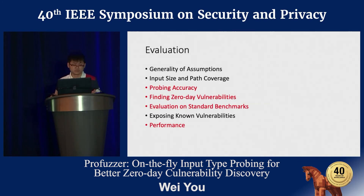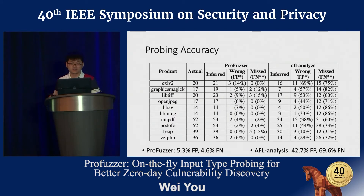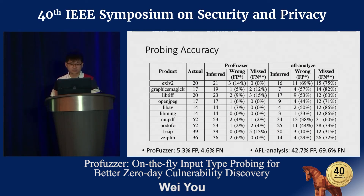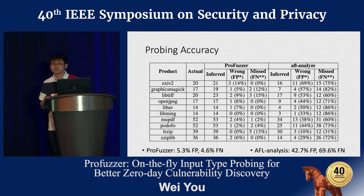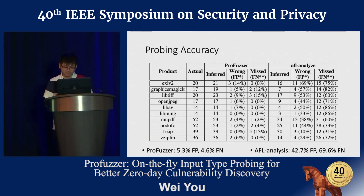We conducted experiments to evaluate the effectiveness and efficiency of Profiler. The first evaluation is probing accuracy, measuring whether Profiler can correctly identify fields and their types. We acquired ground truth by manually checking how applications handle individual bytes and compared probing results to measure false positive and false negative rates. Profiler has only around 5% false positive and false negative rates on average, while AFL's analyzer has around 40% false positive and 70% false negative rates.